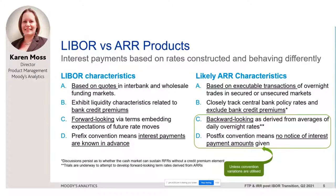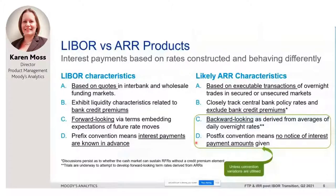The link to central bank rates means ARRs track policy rates closely. Whereas LIBOR embeds the credit premium related to the bank as a counterparty, as a rule ARRs don't, so the behavior of the two rates can be different in stress. At the current time we assume that products will be linked to pure ARR. Another important feature is that coupons for ARR-linked products are derived from averages of daily rates over a historical period — very unlike LIBOR which is forward-looking. Existing overnight rates such as OIS rates operate under a post-fix convention, so unlike LIBOR the customer won't know their interest payment ahead of time.